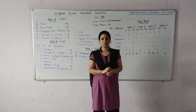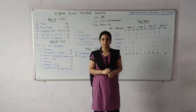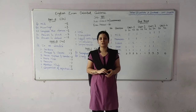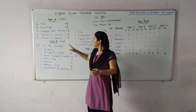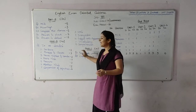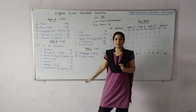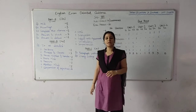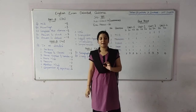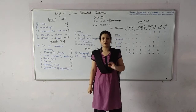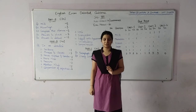So first of all, we will discuss the format of English and grammar, which has three parts — Part A, B and C. Part A is from English, Part B is of grammar, and Part C is of the writing section.